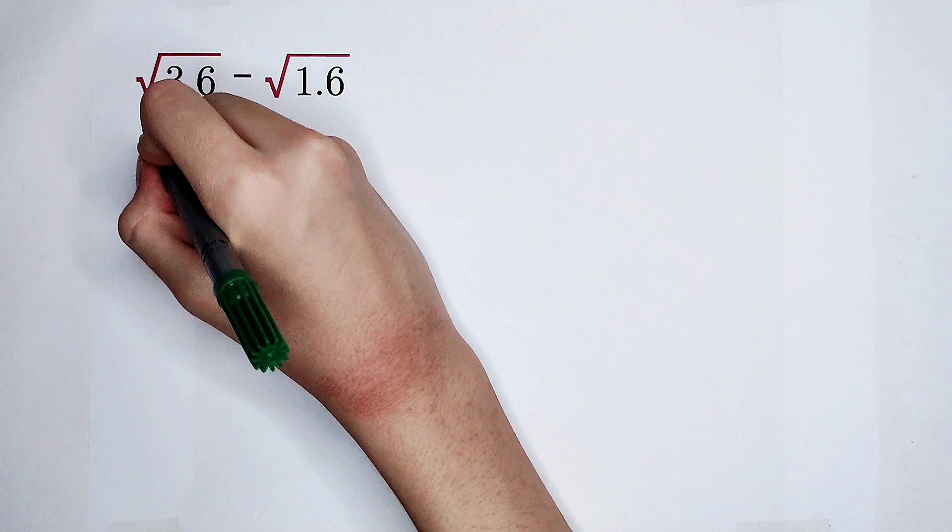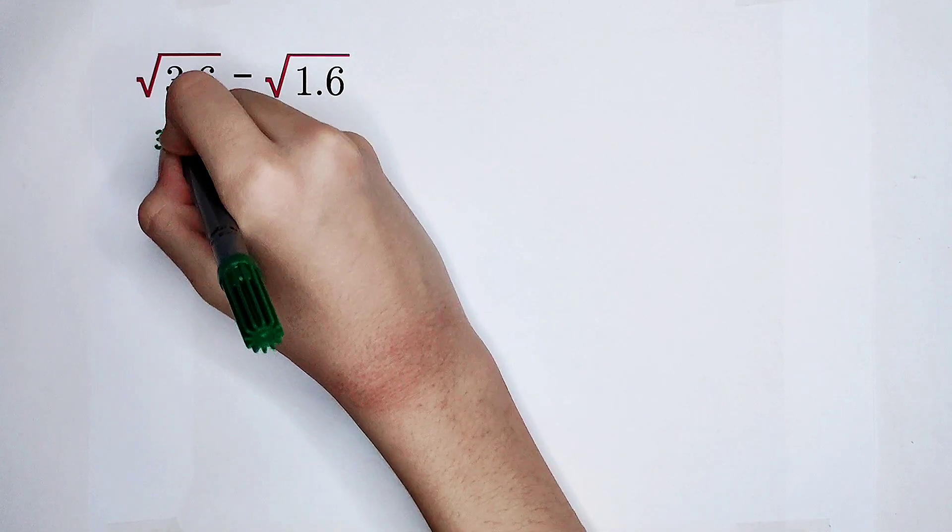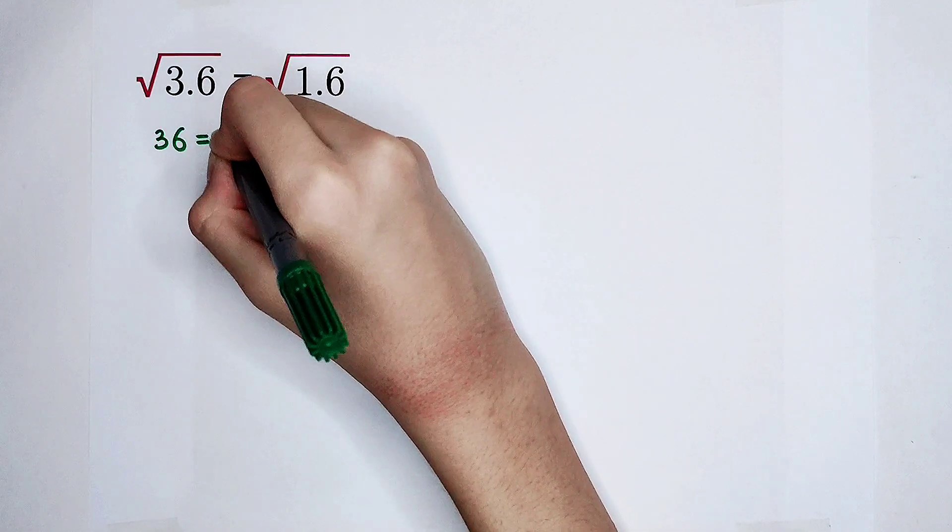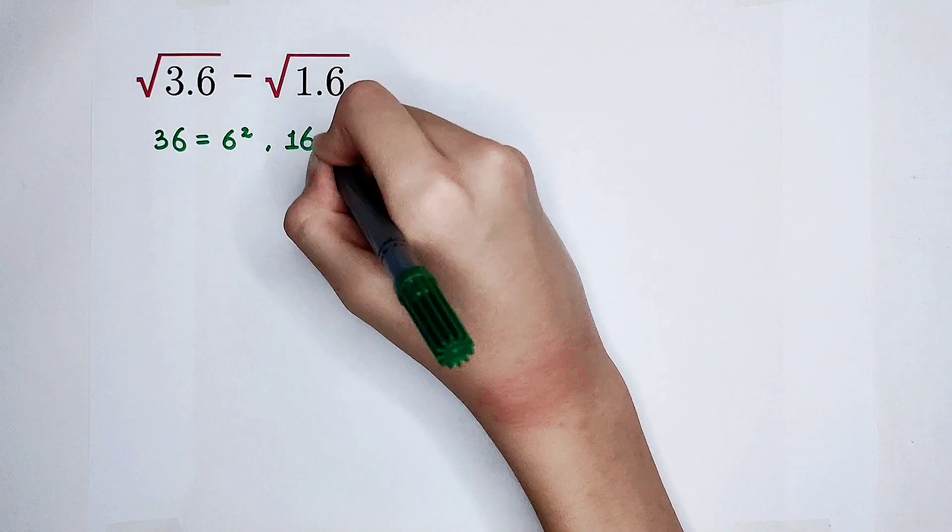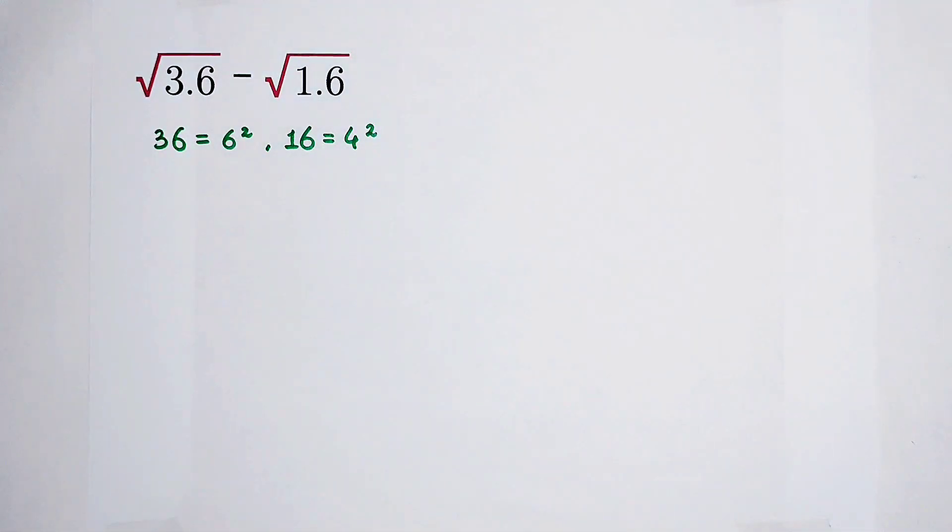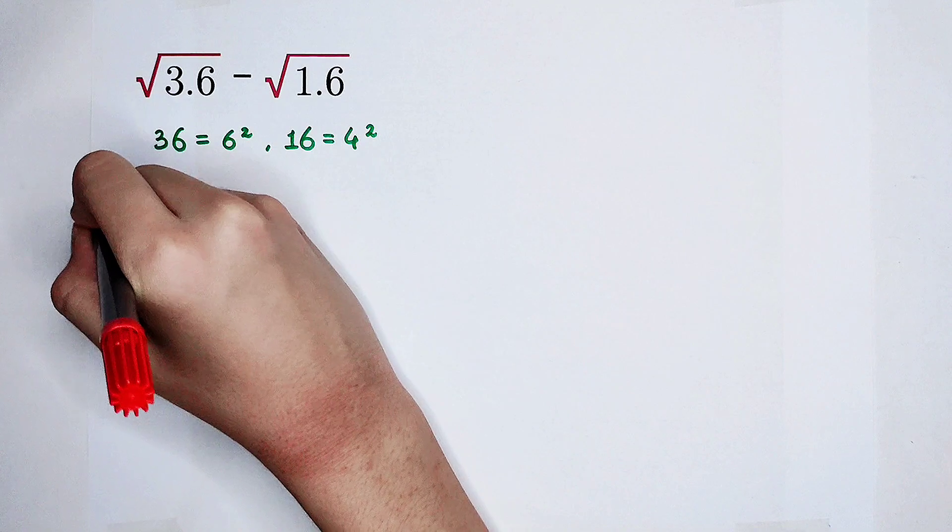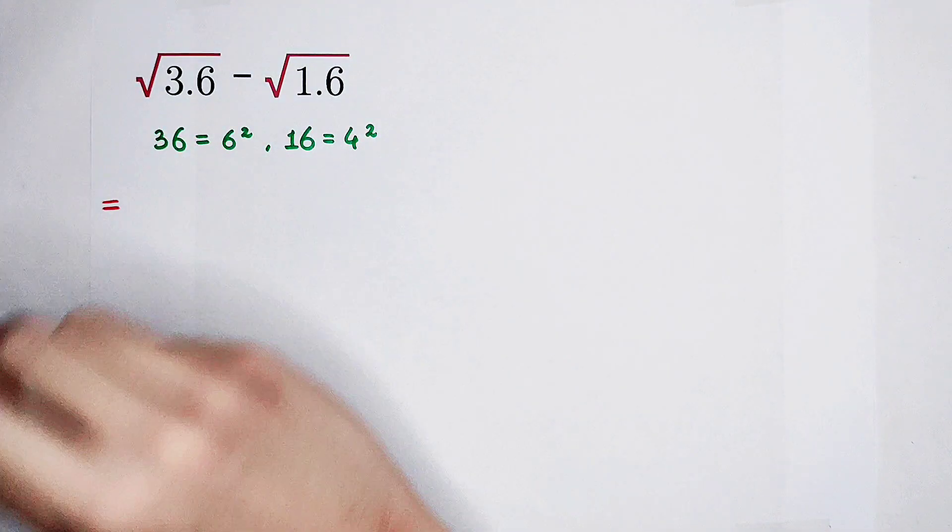I'm going to note that 36 is equal to 6 squared, and 16 is 4 squared. And then, our first step comes.